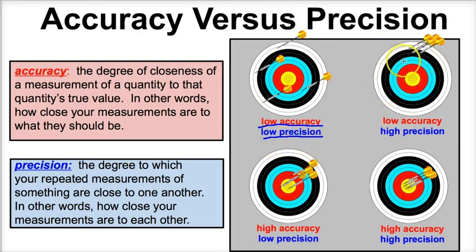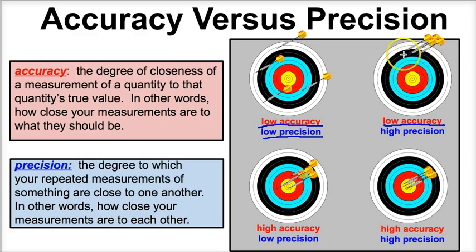Let's take a look at this next example. Once again, we're far away from the bullseye, so we have low accuracy — the object of darts is to get the bullseye every time and we're far from that. However, these darts are all grouped very close to one another, so we have high precision.